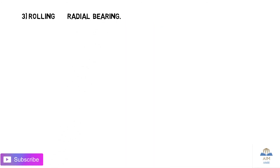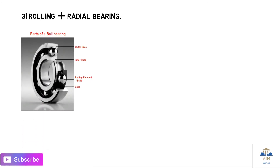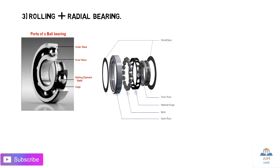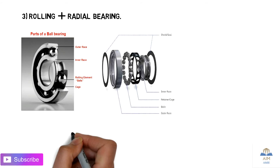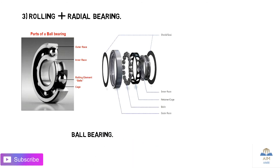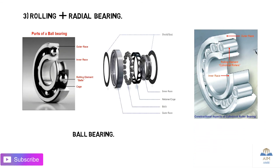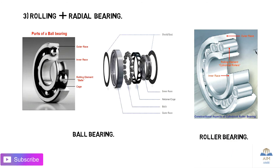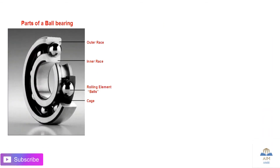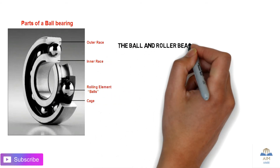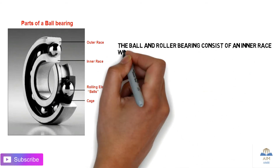The third combination is rolling plus radial bearing. This image shows the parts of a typical ball bearing. In the second image, the balls have been replaced by rollers — that is the roller bearing. So the ball bearing and roller bearing both fall under the rolling plus radial bearing category.